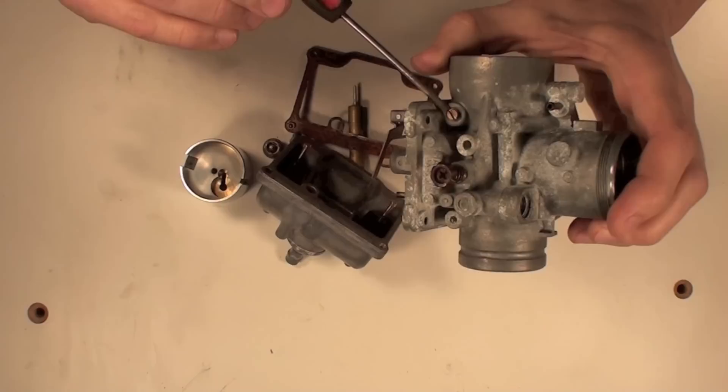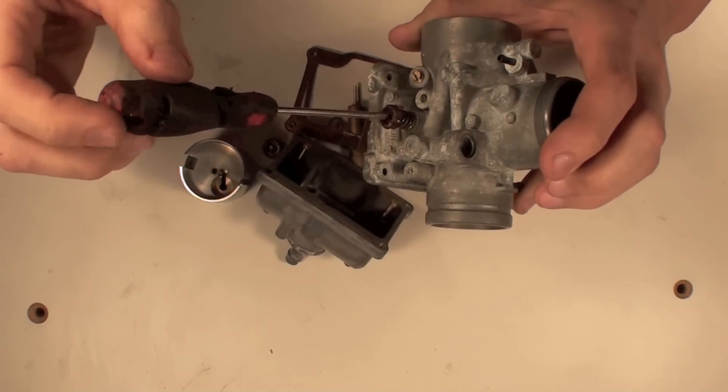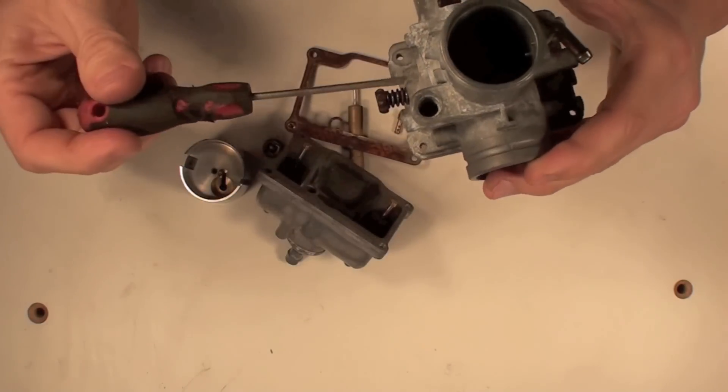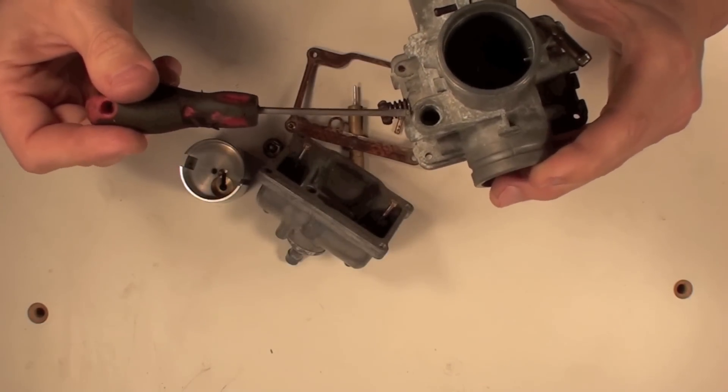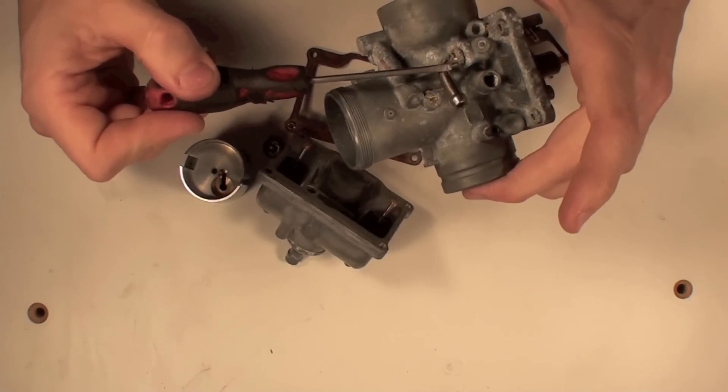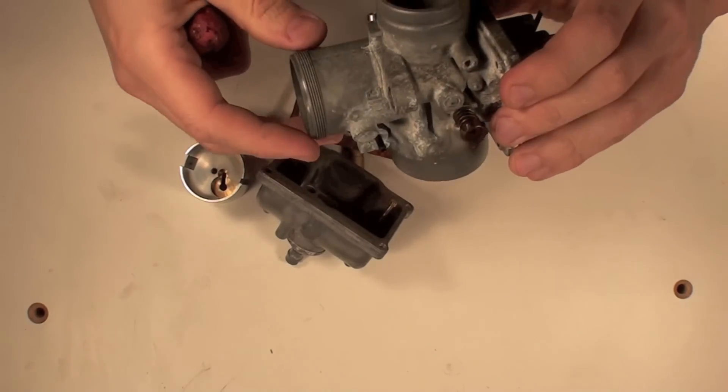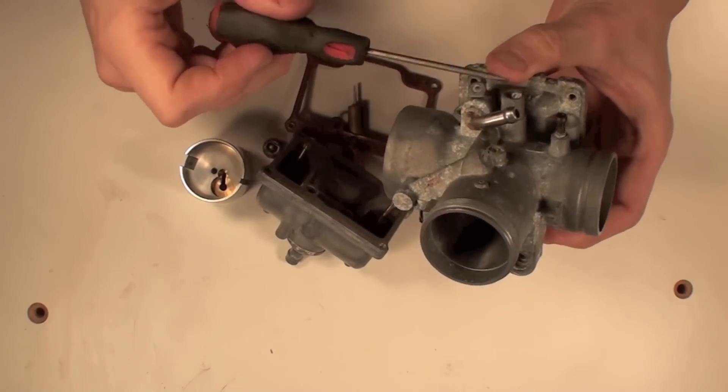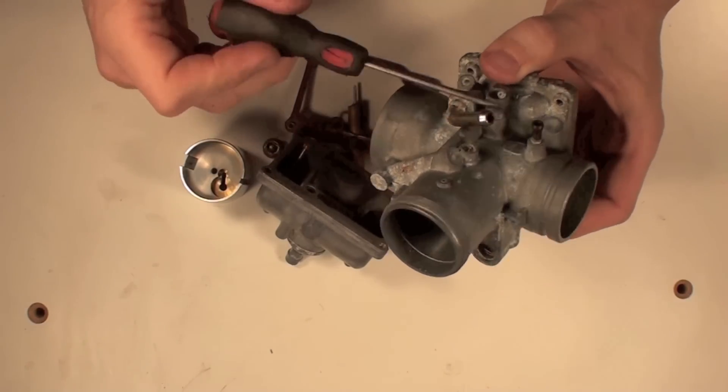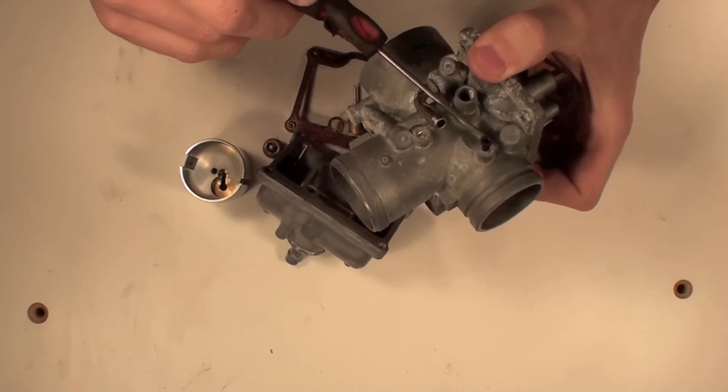This is your air screw, right here. This is your idle adjustment screw. This is where your choke plunger seats, in here. This is where your fuel comes in, your fuel inlet. Some carburetors have overflow valves on them, with little tubes coming off. This here actually just is vented into the air box on the snowmobile that I have.